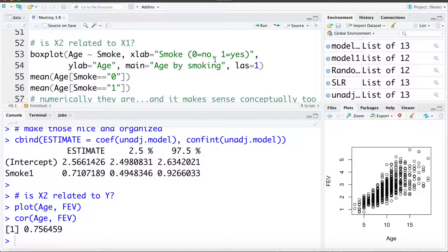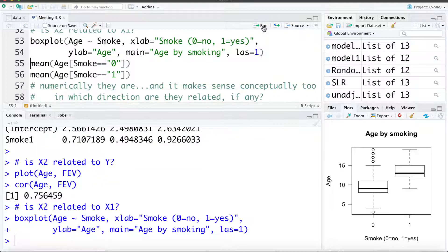Now we can check if age and smoking are related. Visually to do so we can look at a box plot. Here I'm going to look at a box plot of age for smokers and non-smokers and we can see there the smokers are much older on average than the non-smokers.